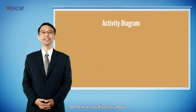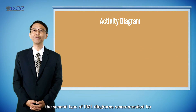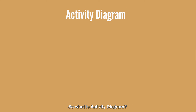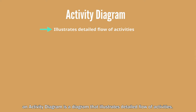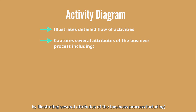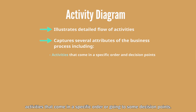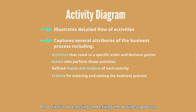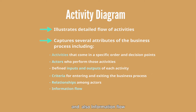Next, let us discuss the second type of UML diagram recommended for business process analysis: the activity diagram. An activity diagram illustrates the detailed flow of activities. It is recommended that an activity diagram be used to capture a detailed elaboration of a use case diagram by illustrating several attributes including: activities in specific order or leading to decision points; actors who perform those activities; defined inputs and outputs for each activity; criteria for entering and exiting the business process; relationships among actors; and information flow.